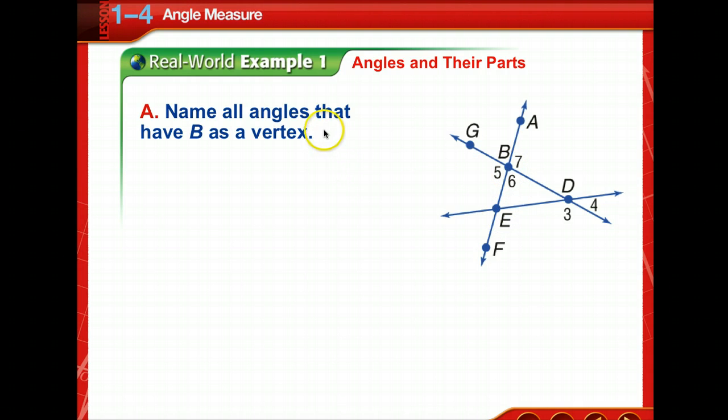In this example, we're asked to name all the angles that have B as a vertex. So notice angle 5 has B as a vertex. Angle 6 has B as a vertex. And angle 7 has B as a vertex. Also, this one doesn't have a number, but we can label it ABG, angle ABG. Whenever we're naming an angle, if you don't have a number for it or something that specifies that that is a unique angle, then you name it with the vertex listed in the middle. Always in the middle.